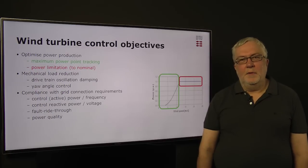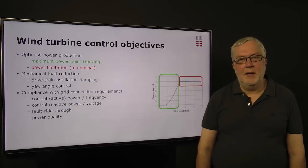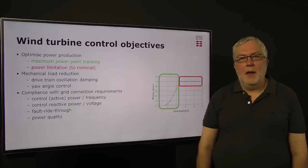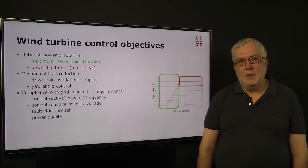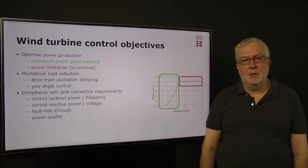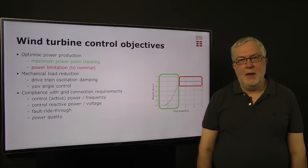Another group of objectives for control is to comply with the requirements from the grid side, and they are becoming more and more important. This includes being able to control active and reactive power so that we can support the frequency and the voltage in the grid, and also to respond in a stable way when there are disturbances in the grid.